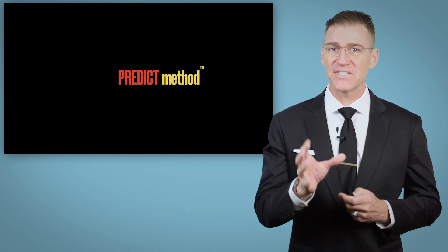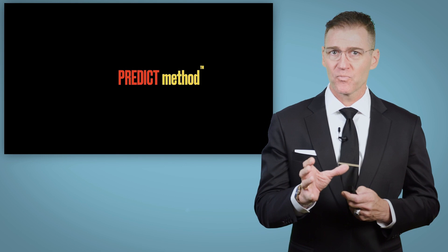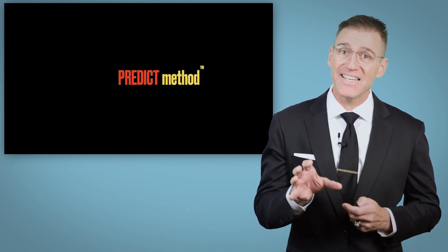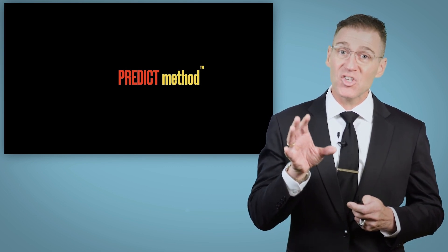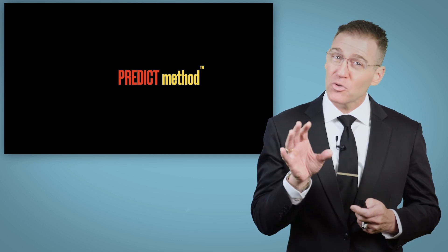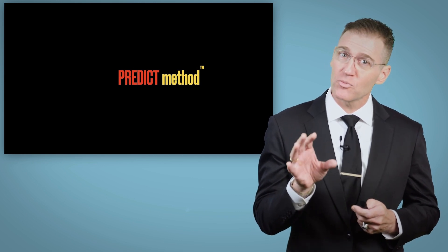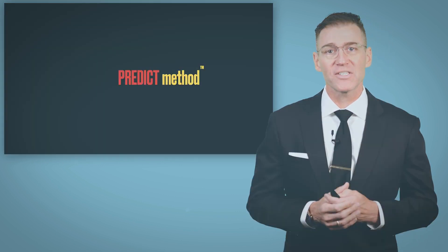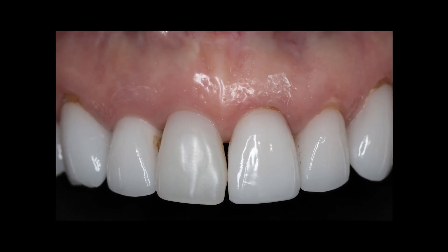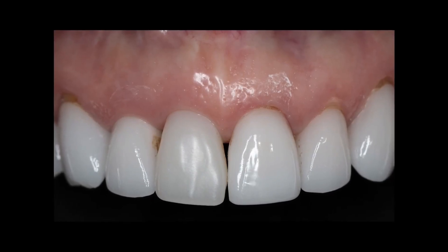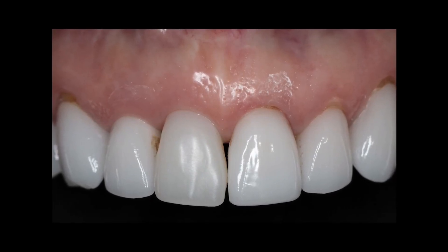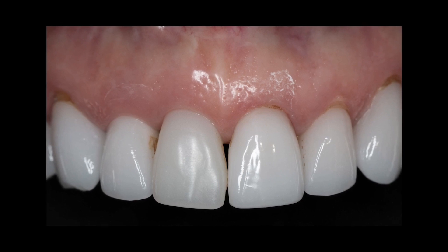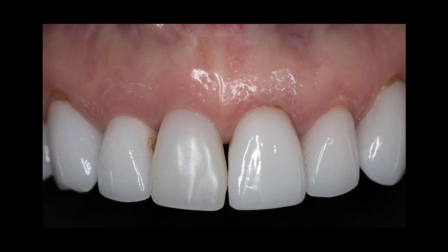Now, the PREDICT method is going to allow us to predict optimal soft tissue results around dental implants, so that we don't get something like this. We have an implant in the number eight position and you can clearly see there's a black triangle — the dreaded black triangle.